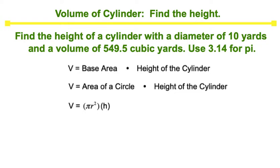So our question states, find the height of a cylinder with a diameter of 10 yards and a volume of 549.5 cubic yards.